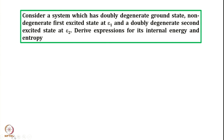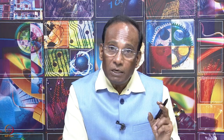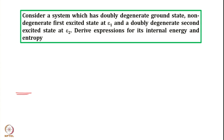Let us understand this problem. There is a doubly degenerate ground state at E0 = 0. There is a non-degenerate first excited state at energy E1. And there is a doubly degenerate second excited state at energy E2. We need to derive expressions for internal energy and entropy.